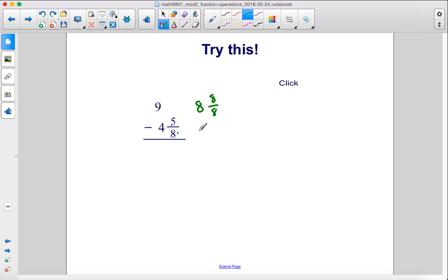So then we just have our 4 5/8, and here's our new problem. So we subtract 8 - 5, we get 3/8, and we subtract 8 - 4, we get 4, and that is our answer.